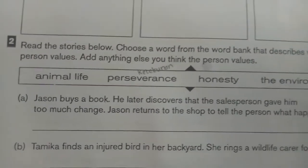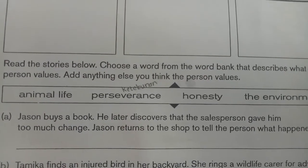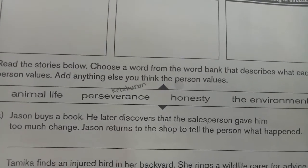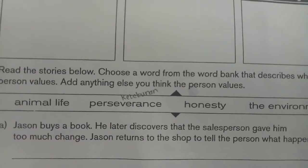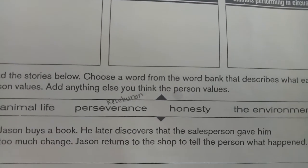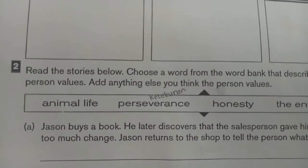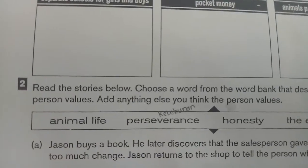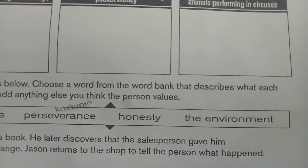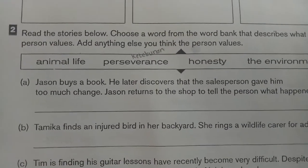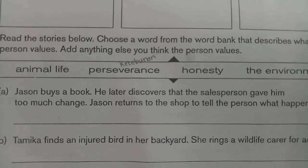The first story: Jason buys a book and later discovers that the salesperson gave him too much change. Jason returns to the shop to tell the person what happened. So what values does Jason have — animal life, perseverance, honesty, or the environment? The second story: Tarnika finds an injured bird in her backyard and rings a wildlife carer for advice.